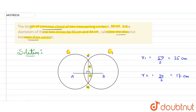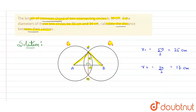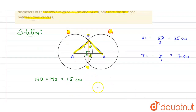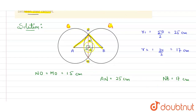I've drawn the radii — AN is the radius of the first circle and NB is the radius of the other circle. Let's label the points: O is the midpoint of the chord, so ON equals MO equals 15 centimeters. AN is 25 centimeters and NB is 17 centimeters. We will use the Pythagorean theorem to find AO and OB, since AB equals AO plus OB.